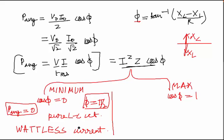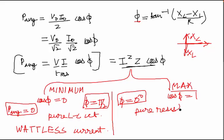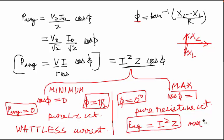For maximum power dissipated, cos(φ) must equal 1, meaning φ = 0 radians. This is the case of a pure resistive circuit with no inductance or capacitance. In this case power dissipated is maximum, equal to I²·Z. These are the two conditions: minimum power in a pure LC circuit with wattless current, and maximum power in a pure resistive circuit.